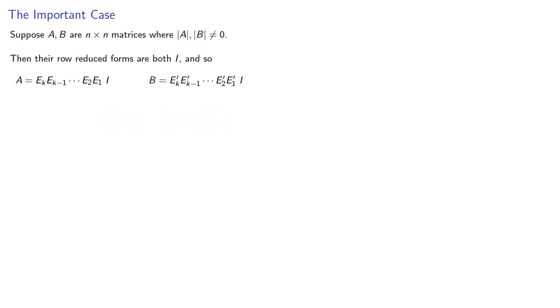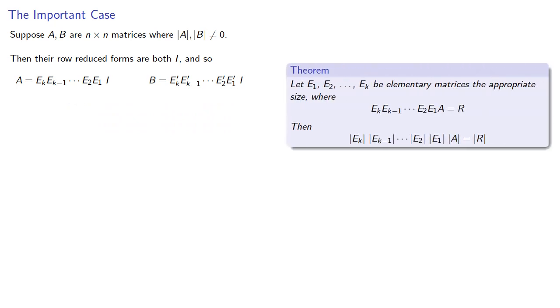And remember our theorem says that if we have a sequence of elementary row operations, the determinant of the matrix is the product of the determinants, which gives us an expression for the determinants of A and B.